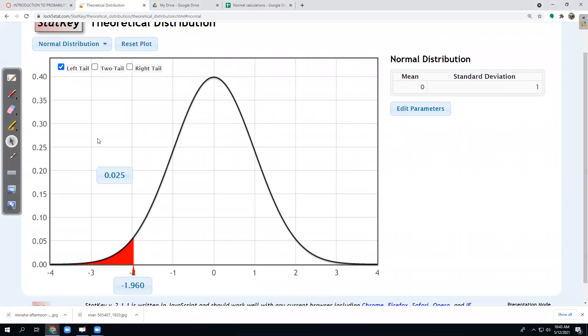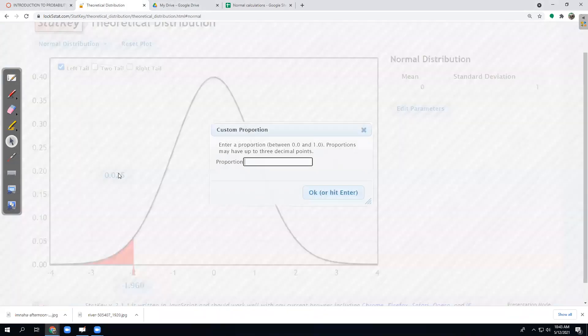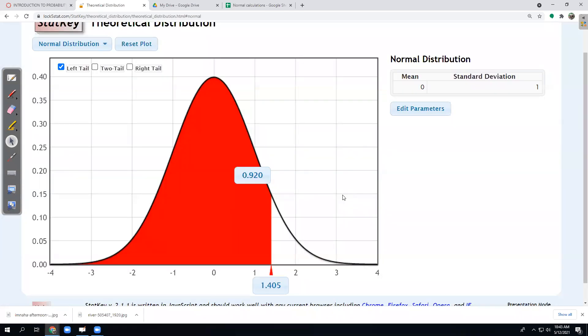So I just go over to left tail. Percents, probabilities, areas, those are up here. So here I would type in 0.92. It's got to be a decimal between 0 and 1. They remind me of that. Hit OK. And then StatKey says the z-score you want is 1.405.